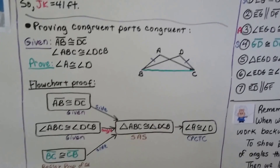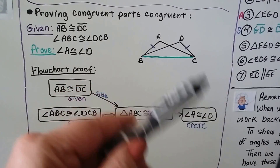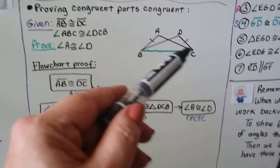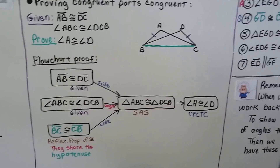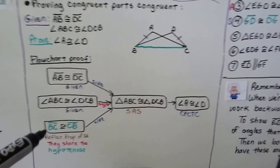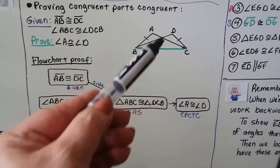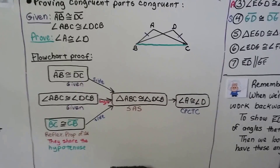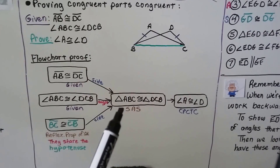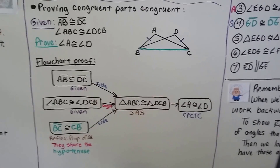Here's proving congruent parts congruent using a flow chart proof. It's given that segment AB is congruent to segment DC, and angle ABC is congruent to angle DCB. We need to prove angle A is congruent to angle D. Segment BC is congruent to segment CB by the reflexive property of congruence, since they share it. So triangle ABC is congruent to triangle DCB by SAS, and angle A is congruent to angle D by CPCTC.